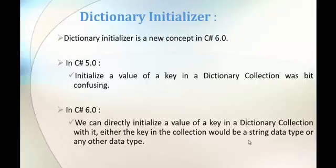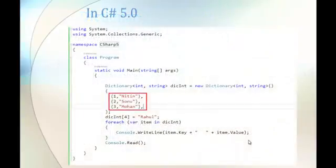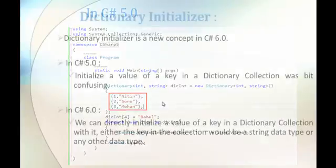Right now we will understand what was present in C# version 5 and what has been newly added in C# version 6. In C# version 5, if you wanted to initialize values to a dictionary with the help of a key, it was a bit difficult or confusing. Here is an image which explains how you store values for a dictionary using the key. You open the braces, then call the respective key and value. Storing 20 to 30 values this way was quite confusing.